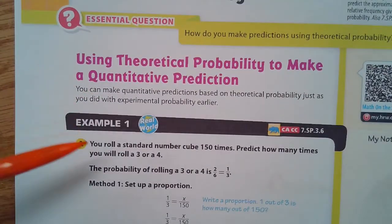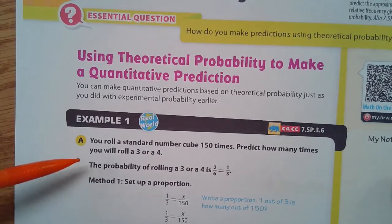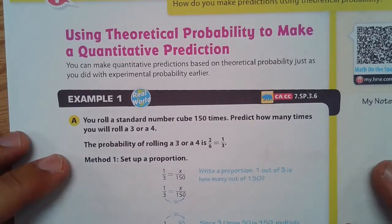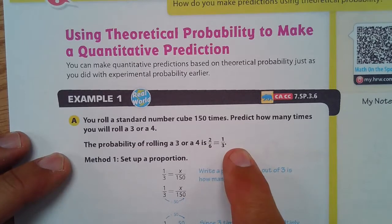Our example one, you roll a standard number cube 150 times. Predict how many times you will roll a 3 or 4. What's the probability of rolling a 3 or 4? Well there's two of those options so that's two out of the six sides and that simplifies to one-third.